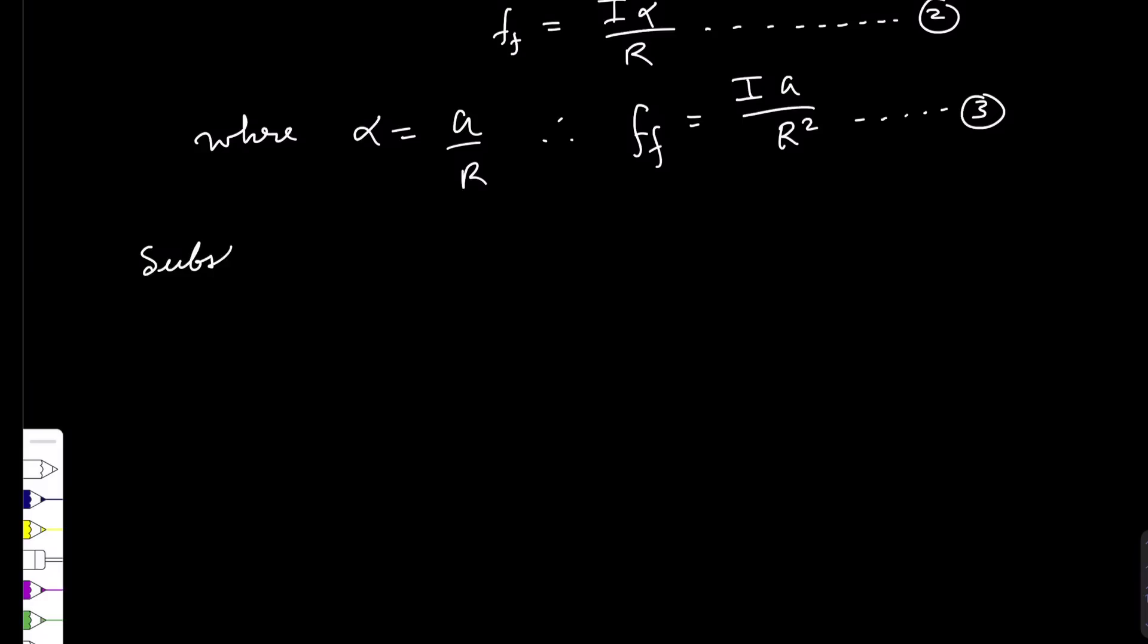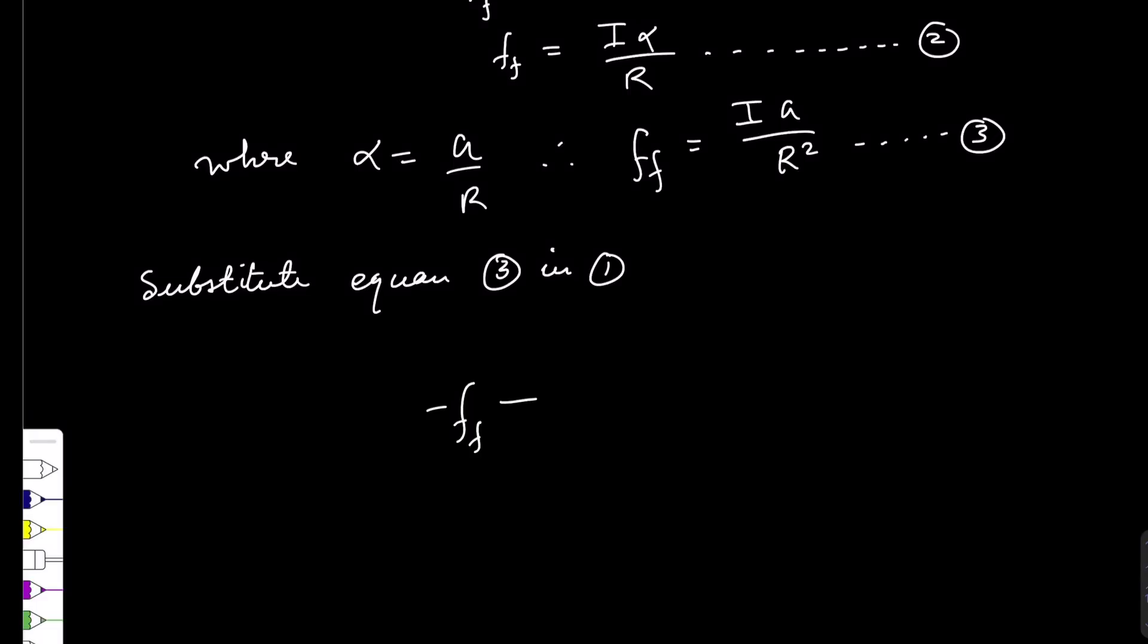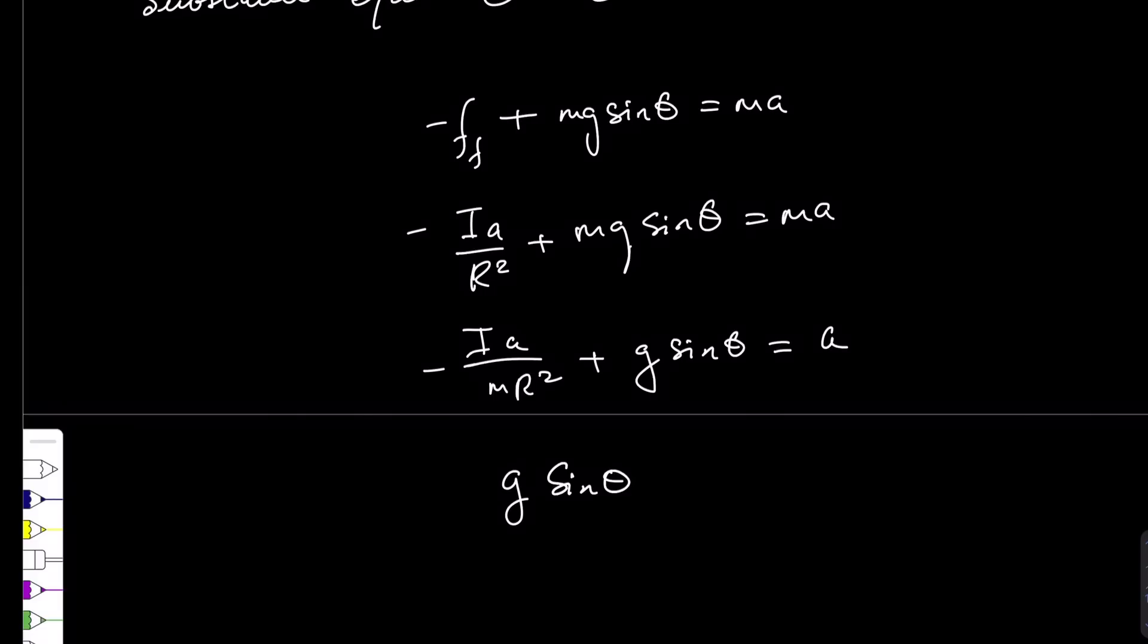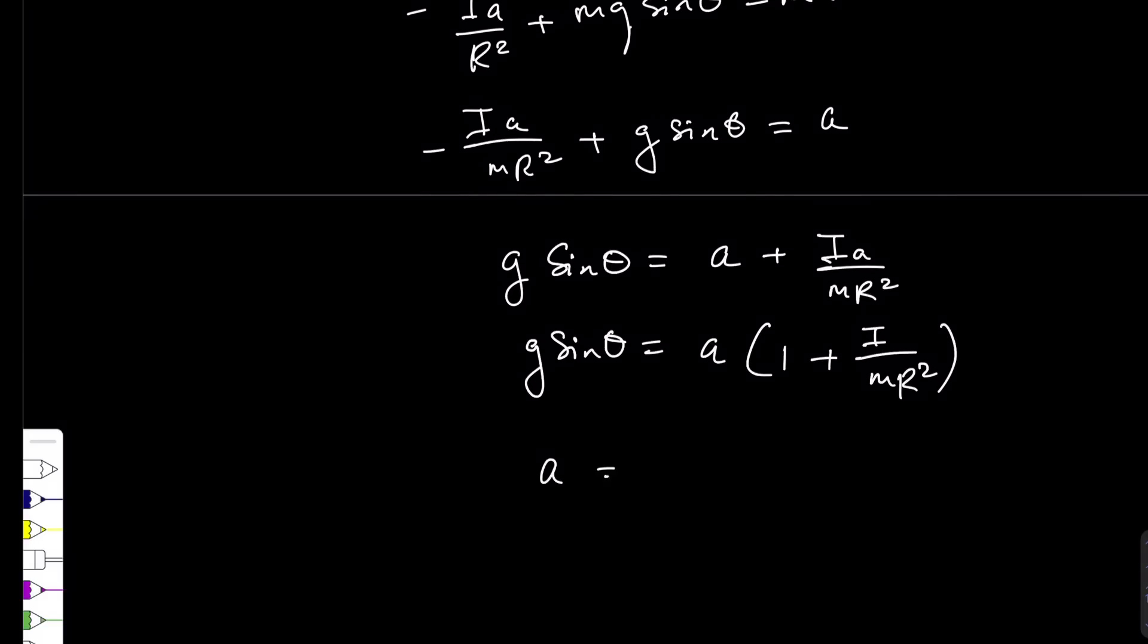So we can substitute equation 3 in 1. That's going to be minus ff plus mg sin theta equal to ma. So we can actually just say this will be minus i a over r squared plus mg sin theta equal to ma. Let's divide throughout with m then we'll get i a over mr squared plus g sin theta equal to a. Then we can take a's to one side, g sin theta equal to a plus i a over mr squared. This is the same as g sin theta. Therefore a will be given by g sin theta divided by 1 plus i divided by mr squared. So this is a useful equation for obtaining the acceleration.